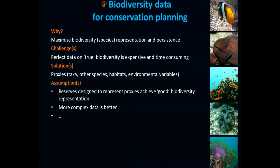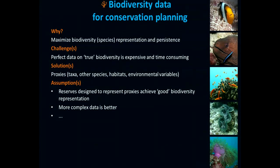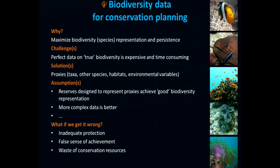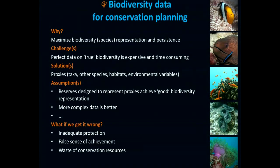There are a number of assumptions behind using proxies. The first is that if we design reserves meant to represent a proxy, we think it will ultimately represent biodiversity well. Another assumption is that collecting more complex data on the proxy will probably be better at representing biodiversity. Why does it matter? If we get this data wrong, we risk inadequate protection of what we want to protect — biodiversity. We risk a false sense of achievement because we measure objectives based on the proxy, and if the proxy is inadequate, we're not meeting biodiversity objectives. And all this can lead to a waste of precious conservation resources.